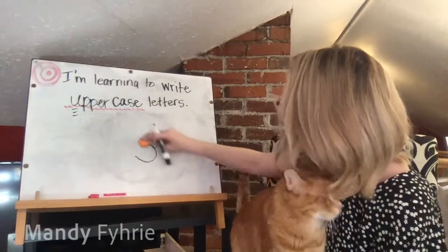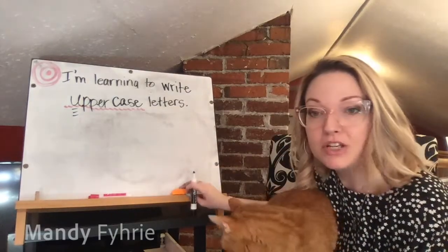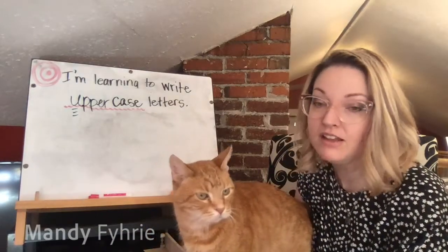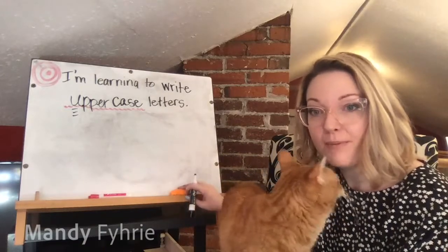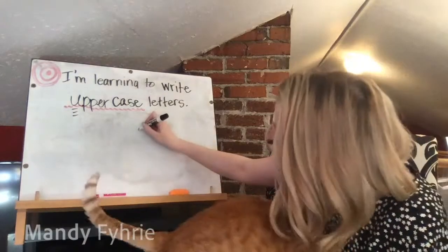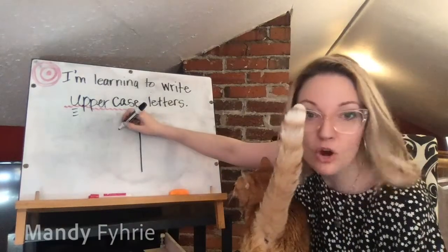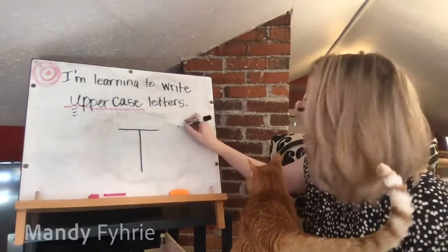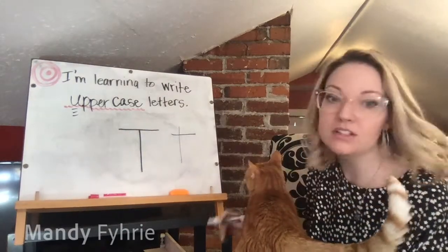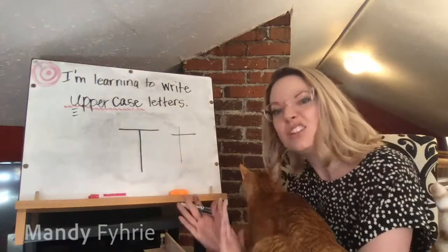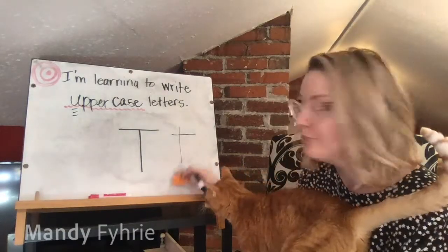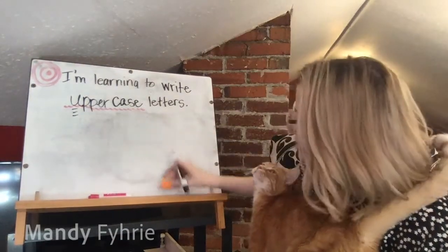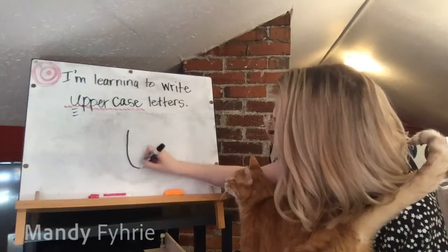Capital T: make sure the cross line is in the correct place at the top, or it could look like an X or a lowercase t. Big line down, hop to the top, and the line goes across at the very top from left to right. If the cross is too low it looks like a lowercase t; if it's tilted it might look like an X.